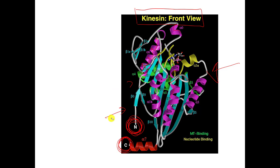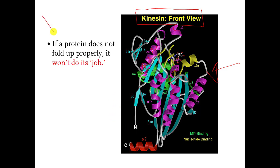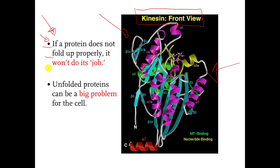That's all I want you to know here. These bullet points I also want you to know, but I don't want you to get lost in the details of this picture. This is very important: if a protein molecule doesn't fold up properly, it will not do its job. And unfolded proteins — proteins that are not folded up properly and not doing their job — can be a big problem for living things, for our cells.